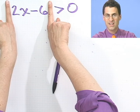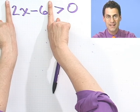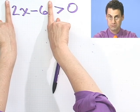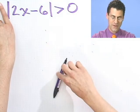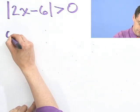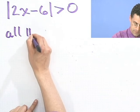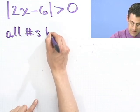So as long as x does not equal 3, I know I'm home free. So in fact, the answer must be all numbers but 3.